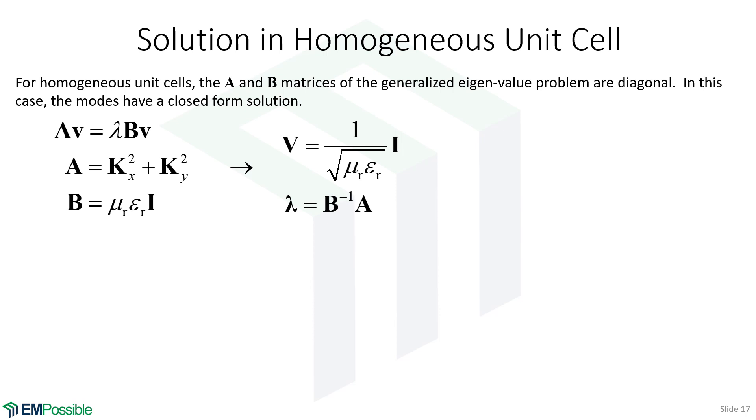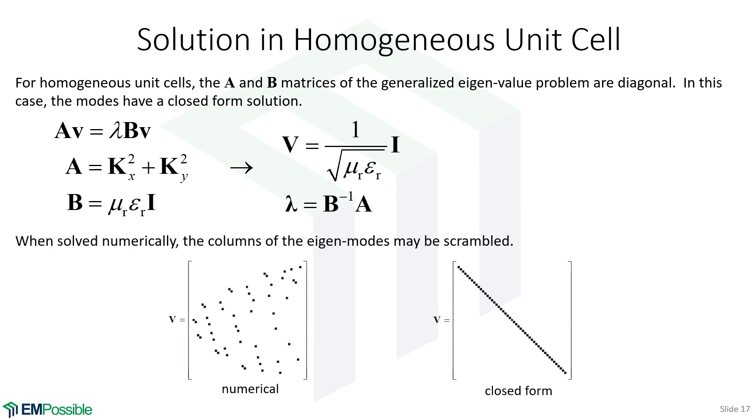What would happen if we had a homogeneous unit cell, and we built this generalized eigenvalue problem? Well, it would turn out that the eigenvector matrix would be a diagonal matrix. Here's the identity matrix, and what would be running down the diagonal? One over the refractive index. Our eigenvalue matrix would be B backward divide A. Now, if we did this analytically, we would end up with an answer that looked like this. Well, let's just say we went ahead and solved it numerically, even though we had a homogeneous unit cell. We might end up with an eigenvector matrix that looks something like this, and we might say, that doesn't look the same. Well, it turns out, if we rearranged the columns and reordered them, we could do that and arrive at this analytical form. So, don't depend on the order of the modes when you solve this numerically.